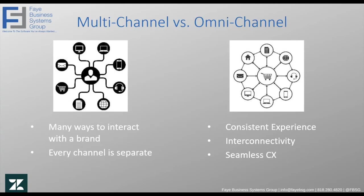Multichannel versus omnichannel support. Both of these mean that you're able to interact with your customers and prospects on multiple channels, but it's the way that you go about it that's a little bit different. With multichannel support, you're still interacting in all these different ways, but every channel is separate. Whereas with omnichannel support, you're creating a seamless, consistent customer experience because you're interconnecting all of those communications. So if somebody emails one sales rep one day and then follows up with another on live chat the next day, those conversations would be connected.